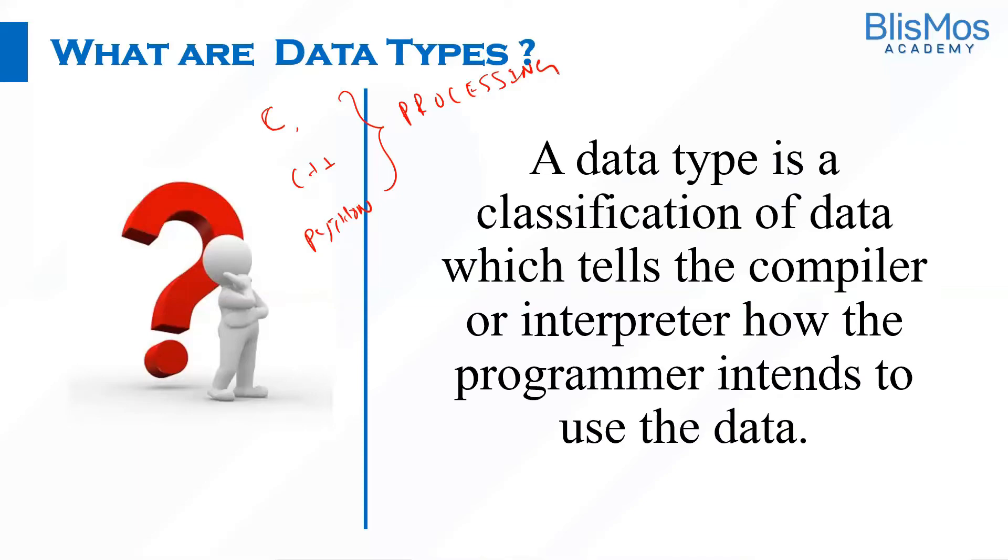A data type is a classification of data which tells the compiler or interpreter how the programmer intends to use the data. There should be a specific way in which we tell the compiler or interpreter how the programmer wants to use that particular data.